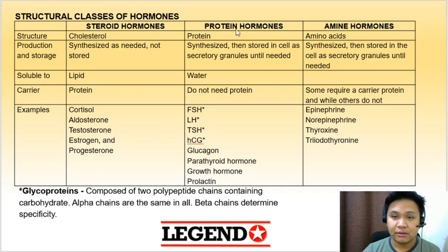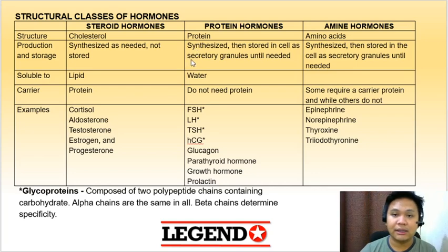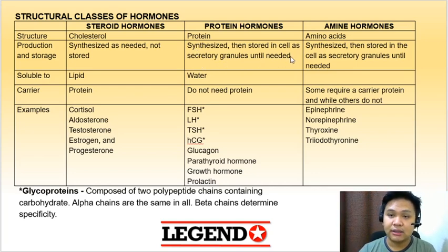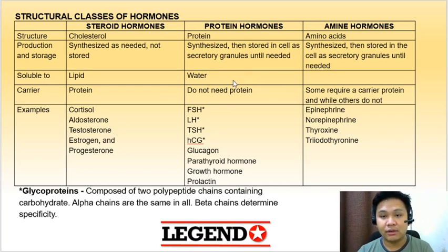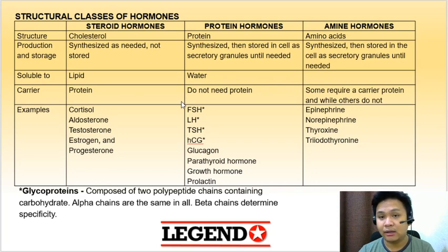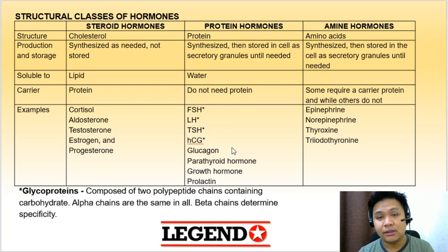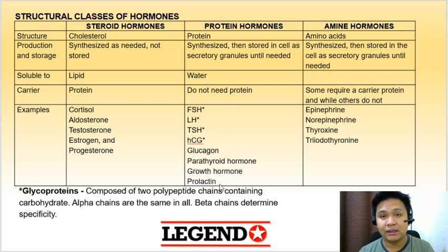Protein hormones are of course made from proteins as well as peptides. They are synthesized then stored in the cell as secretory granules until needed. They are water-soluble. Therefore, they do not need proteins as their carriers. Examples include FSH, LH, TSH, HCG, glucagon, parathyroid hormone, growth hormone, and prolactin.